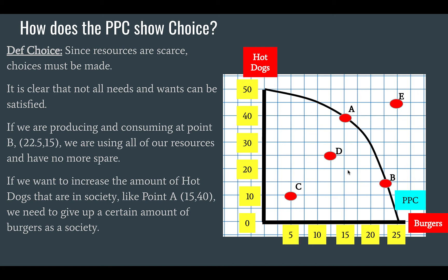If we can accept this fundamental underlying principle of economics — scarcity — then choices must be made. If we are producing somewhere along this PPC curve, which represents our limits of production and as such consumption, and we're at point B, that means we are consuming 22 and a half burgers and 15 hot dogs. We are using up, at point B, every single resource we have to produce that bundle of those two goods. There are none spare and there are no further gains that can be made through increased efficiency.